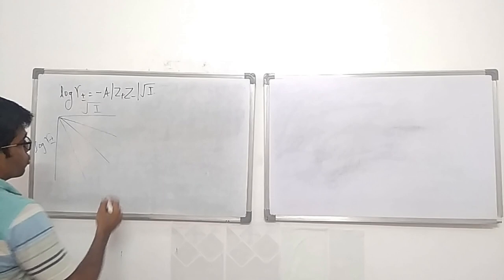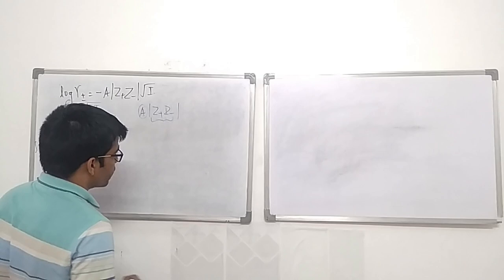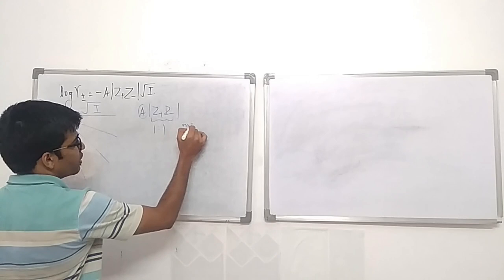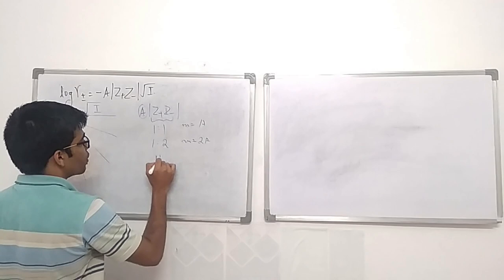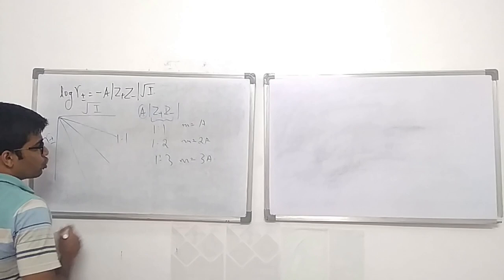For a uni-univalent (1:1) electrolyte the slope is A; for a 1:2 electrolyte it is 2A; for a 1:3 electrolyte it is 3A. As the slope increases, the steepness of the line increases. These lines correspond to MX (1:1), MX₂, and MX₃ type electrolytes respectively.